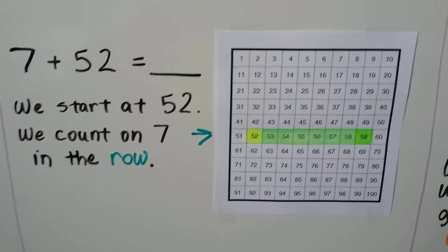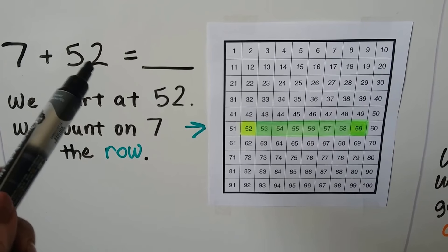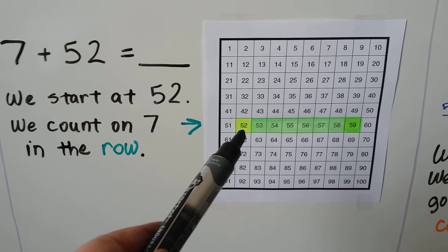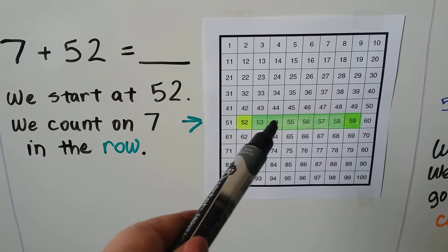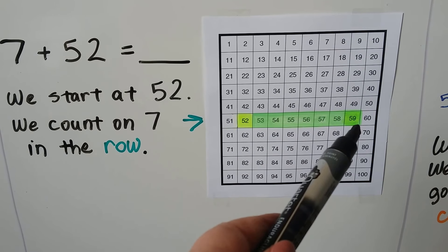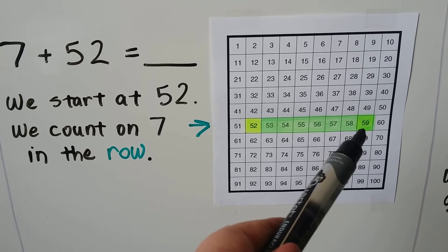7 plus 52. We start with the larger addend, 52. We find it on the hundred chart. We count on 7 in the row. 1, 2, 3, 4, 5, 6, 7. 7 plus 52 is equal to 59.